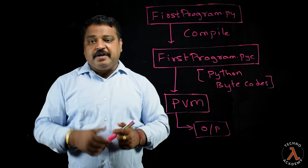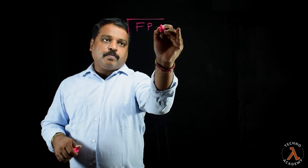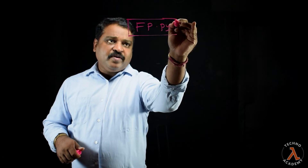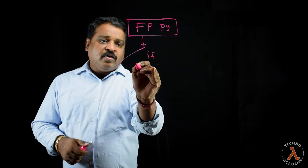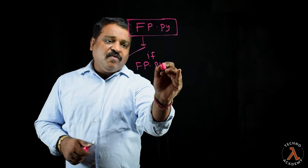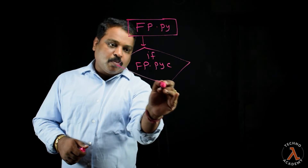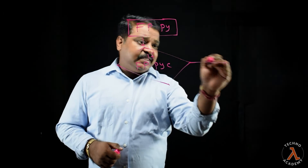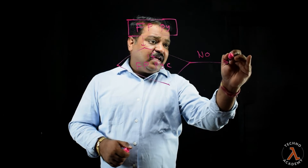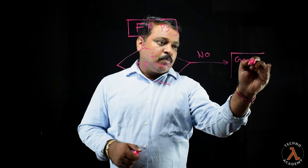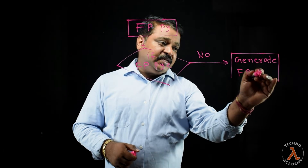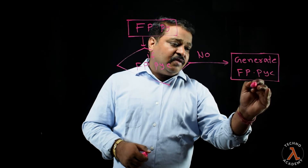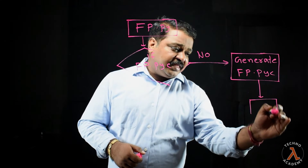Let us understand when and how the Python bytecodes file gets generated. Say we have first_program.py. Whenever we try to execute this program, it first verifies if first_program.pyc exists or not. If the file is not existing, then it will generate first_program.pyc and we will get the output.